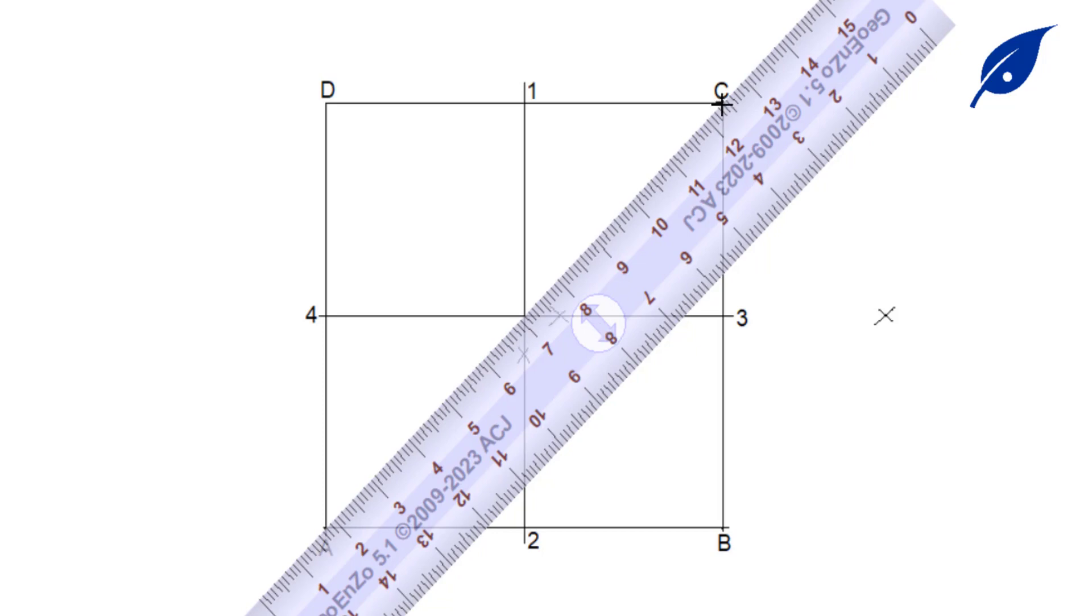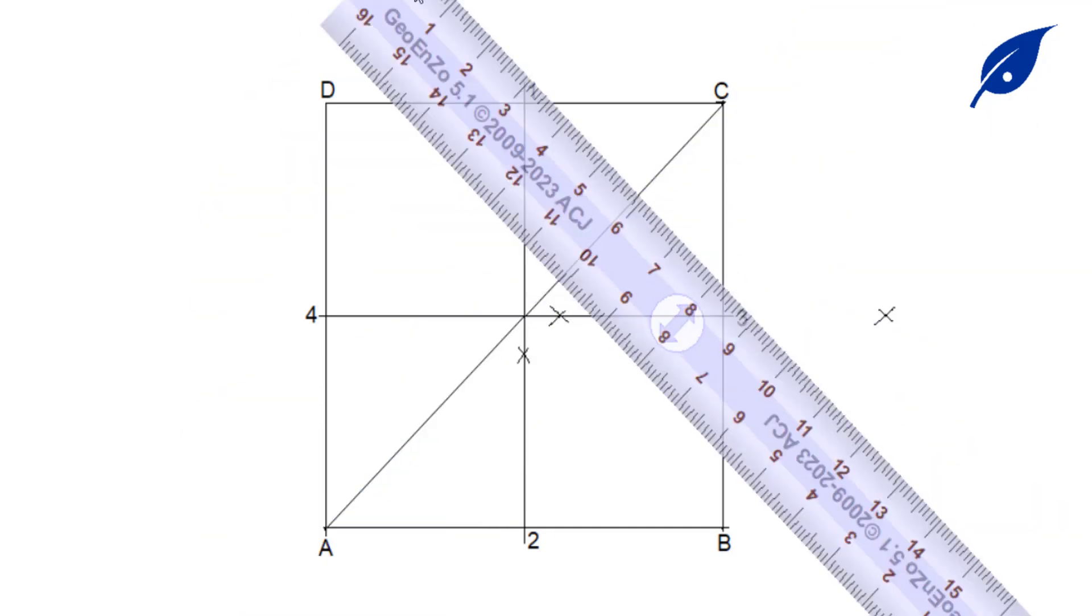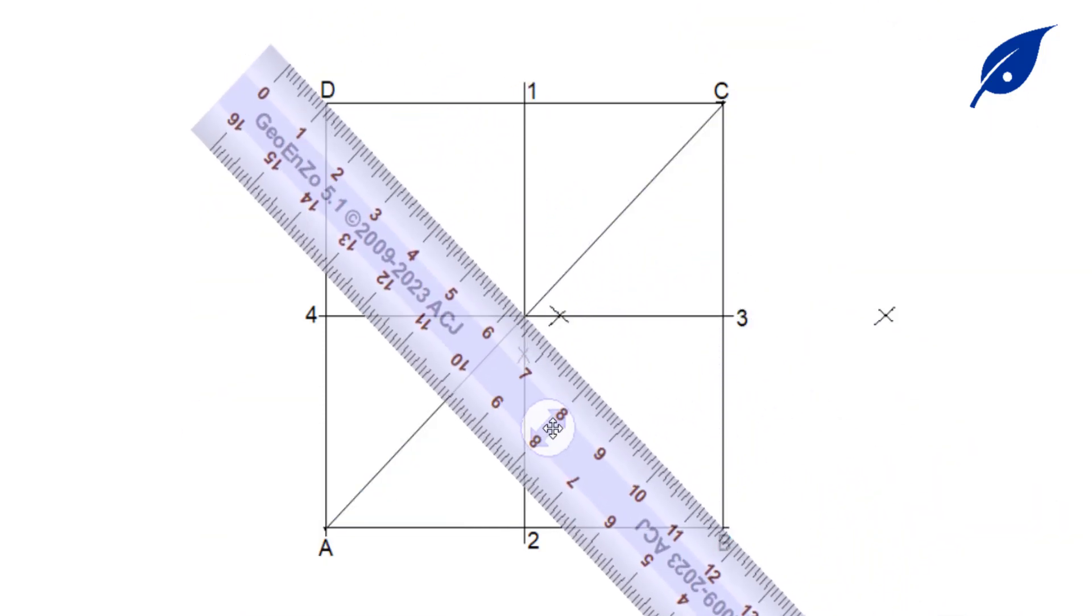The next thing is to draw the diagonals from A to C and also from B to D. The aim of these diagonals is for us to get the center of our circles, the midpoint.